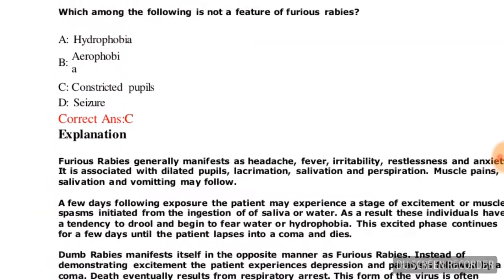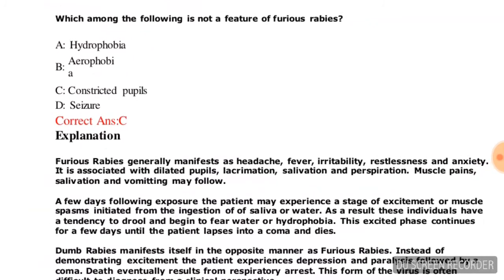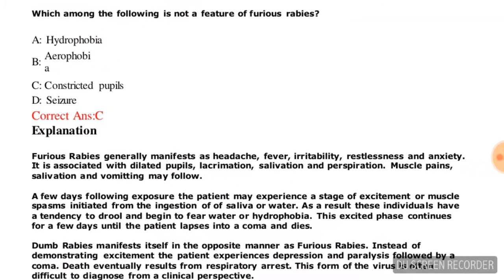Last question for this session: which among the following is NOT a feature of furious rabies? Options are: hydrophobia, aerophobia, constricted pupils, or seizures. The correct answer is option C — constricted pupils is not a feature of furious rabies.